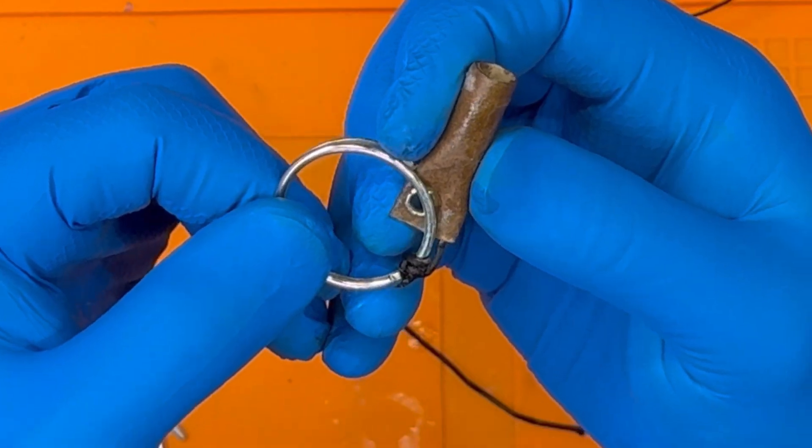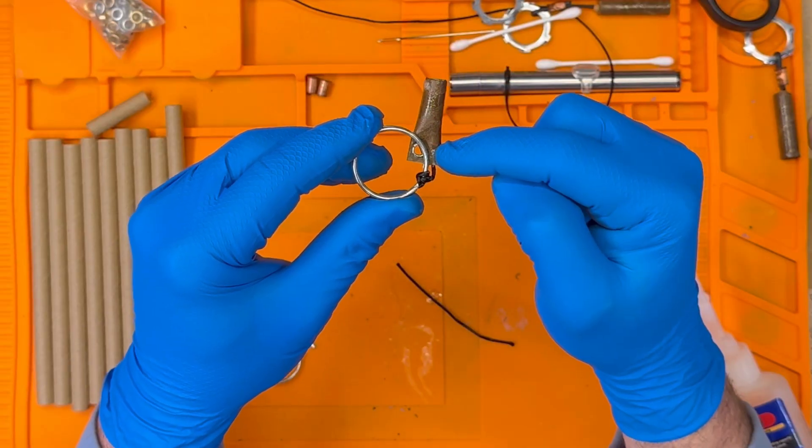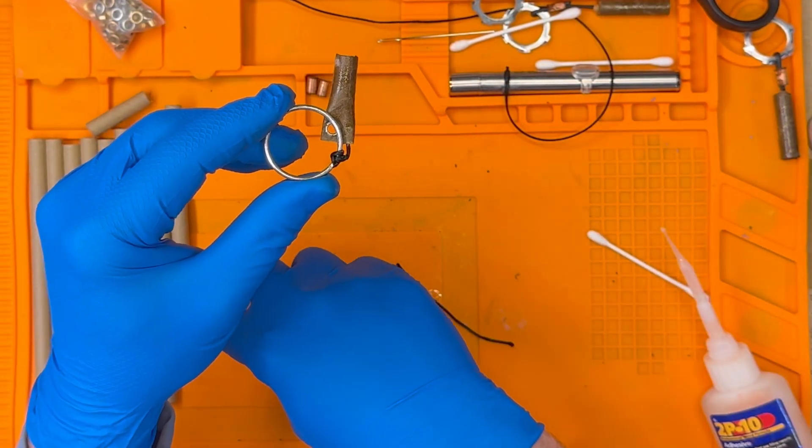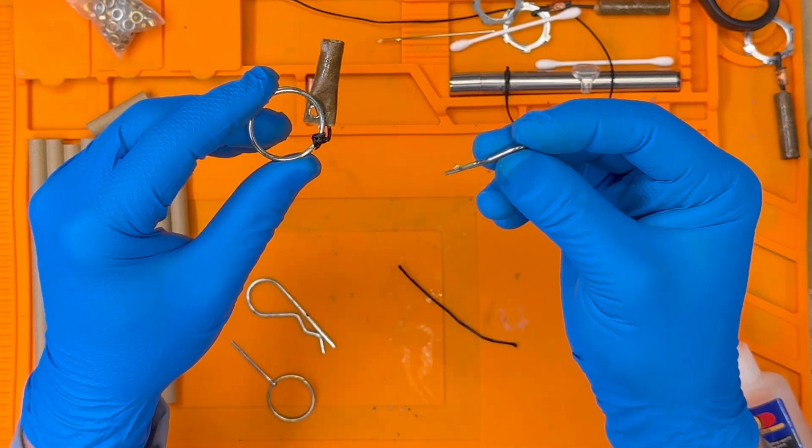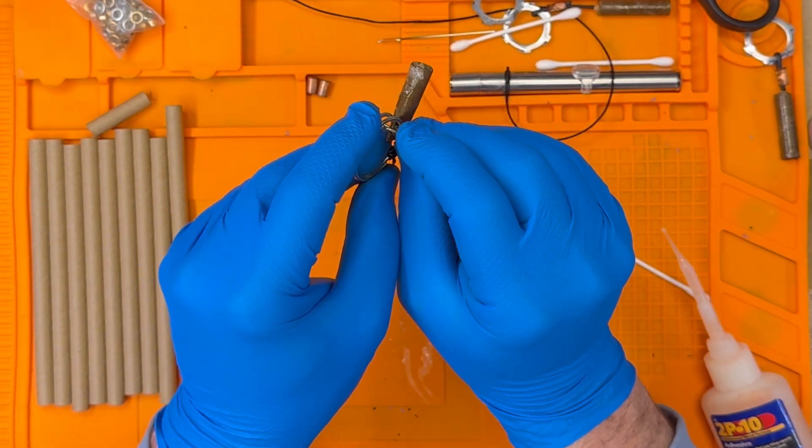Then we split the key ring and slide it over the grommet. We can then use a hitch pin or a cotter pin to fashion a safety. Now that we did all that work, let's destroy it with a demonstration.